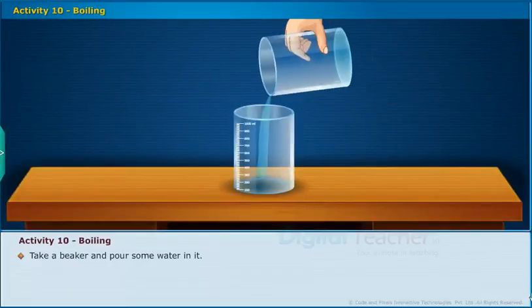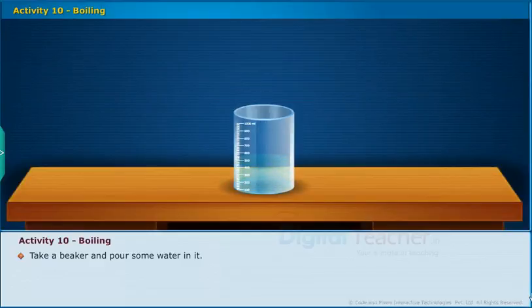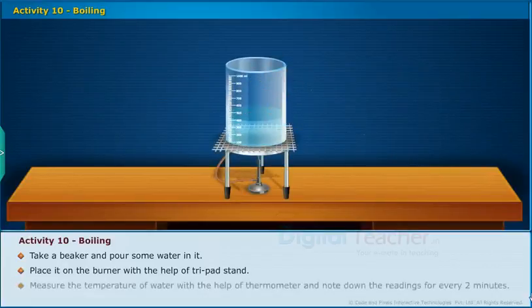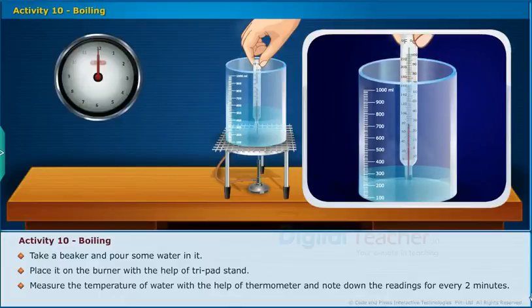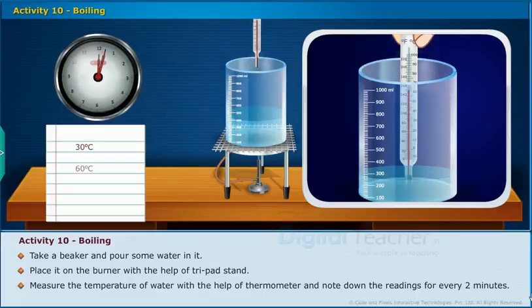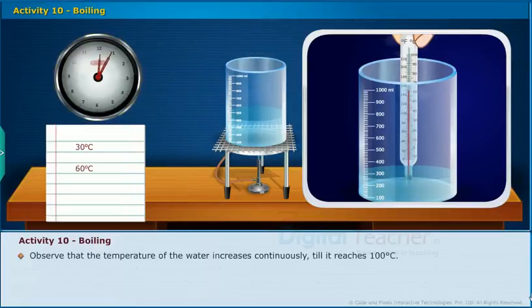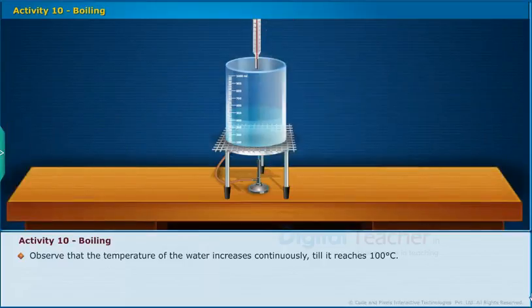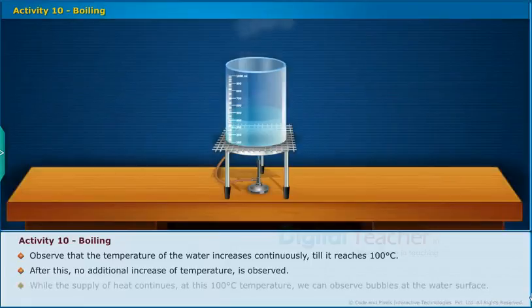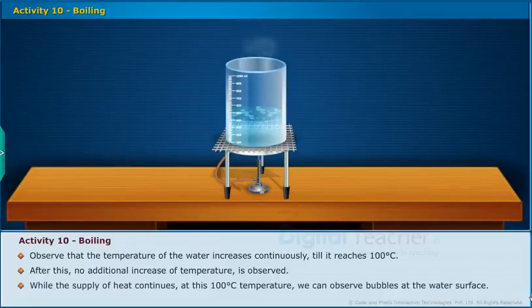Let us perform an activity for boiling. Take a beaker, pour some water in it and place it on the burner with the help of a tripod stand. Measure the temperature of water with a thermometer and note down the readings every two minutes. We observe that the temperature of the water increases continuously until it reaches 100 degrees Celsius. After this, no additional increase in temperature is observed while the supply of heat continues. At 100 degrees Celsius, we can observe bubbles at the water surface.